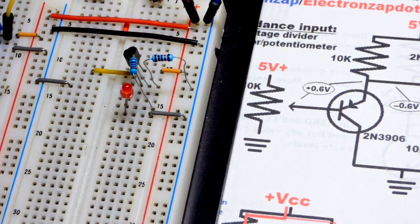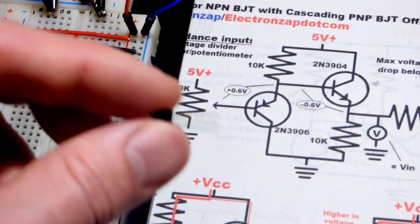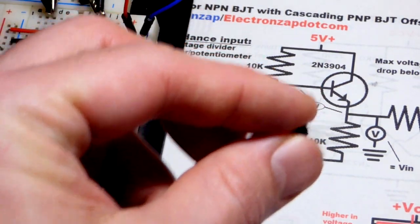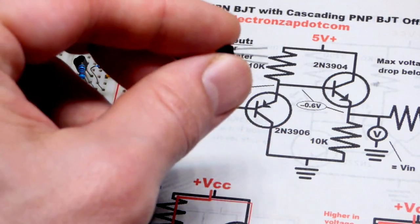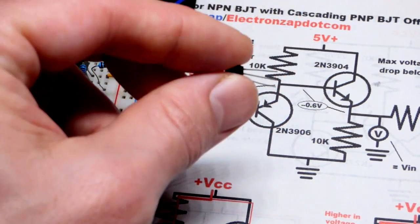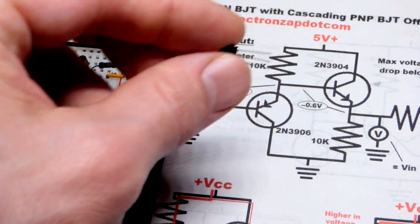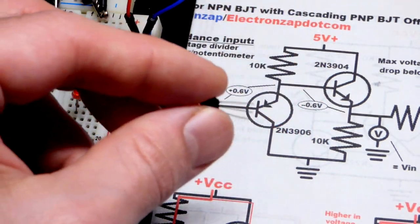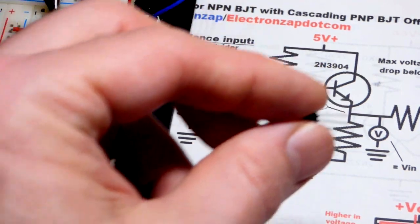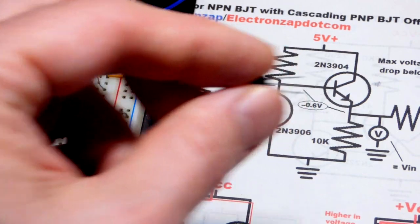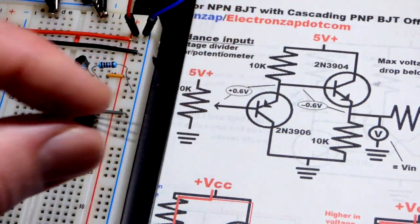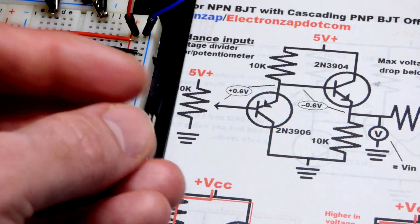So this is also an emitter follower, the exact same except for polarity is opposite. So the wiring is opposite. Instead of a 10 kilo ohm resistor to the negative rail, we have the 10 kilo ohm resistor to the positive rail. And again, these are not setting current, they're just keeping some charge on the emitter right there and also the base of the opposing one right there, the NPN. But for the most part they just kind of help set the voltages. They're not providing power.